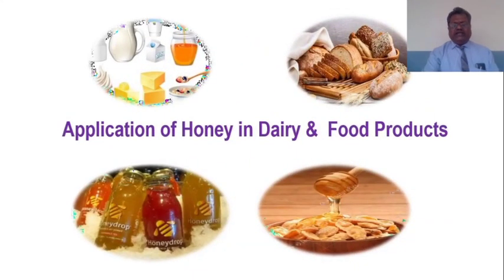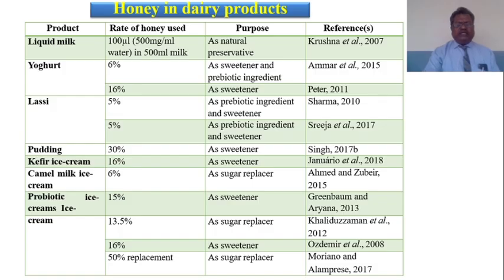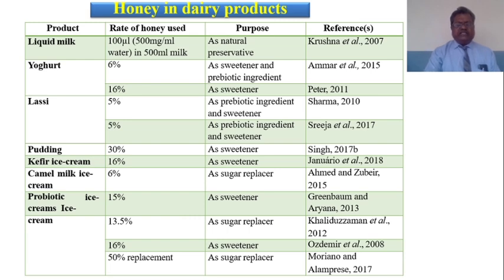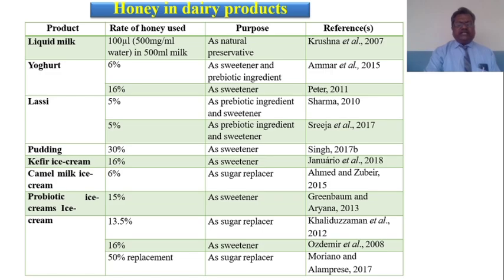These are the applications of honey in dairy and food products. There are a number of dairy products where honey is used, including flavoured milks, yogurt, lassi, puddings, ice creams, and camel milk ice creams. Honey is used at various percentages for sweetness, as a natural preservative, and as a prebiotic ingredient.